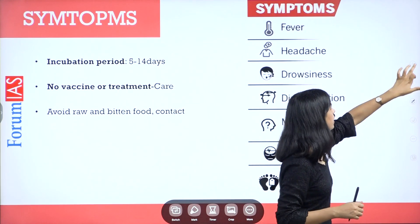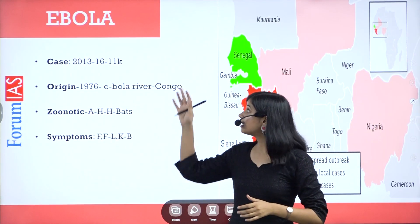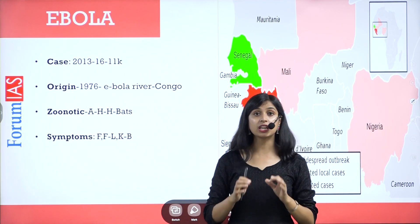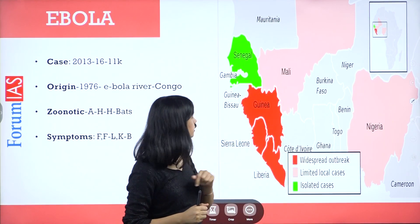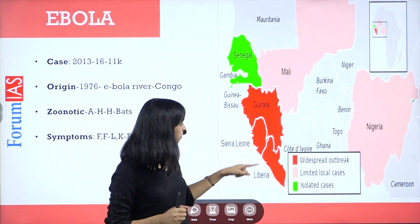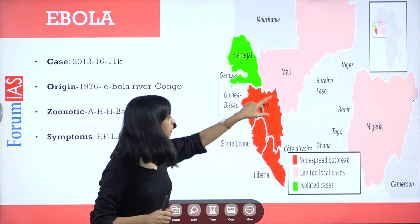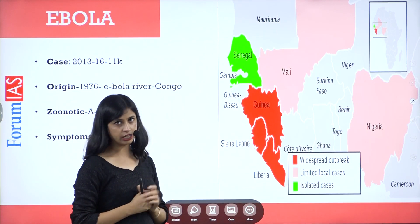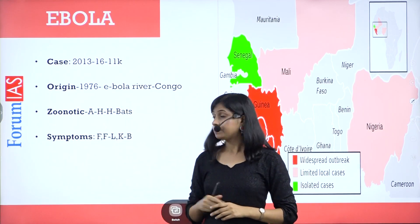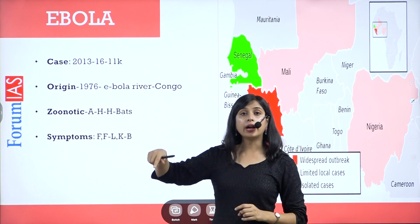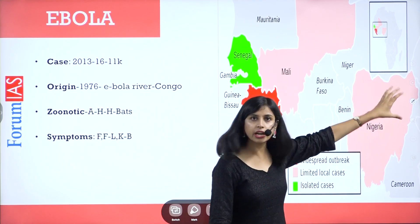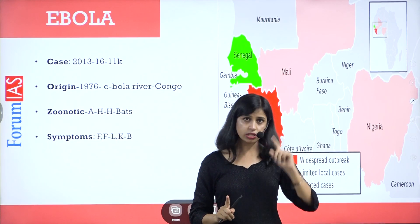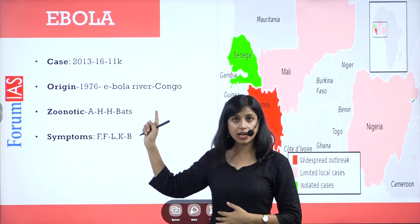Now let's discuss the Ebola virus. Ebola virus cases from 2013 to 2016 saw at least 11,000 deaths in African countries. The most impacted countries were Guinea, Sierra Leone, and Liberia — all coastal countries. Mali, Nigeria, and Senegal had isolated cases. Its origin is the Democratic Republic of Congo, a Central African country, where the first case was seen in 1976. It is named Ebola after the Ebola River in Congo.